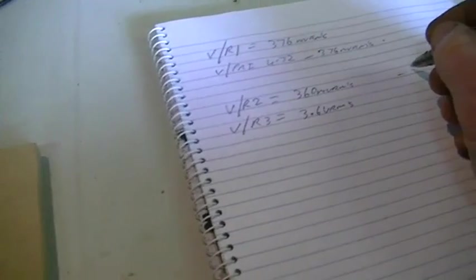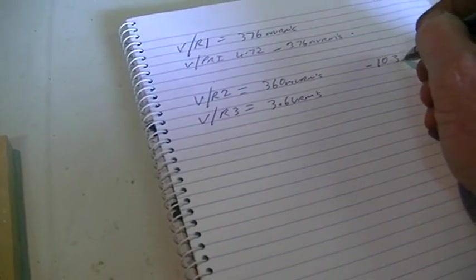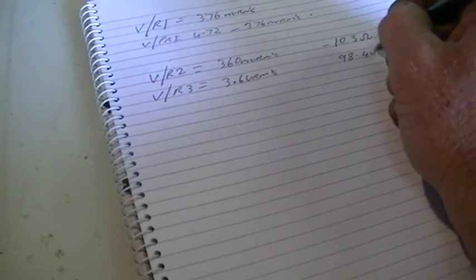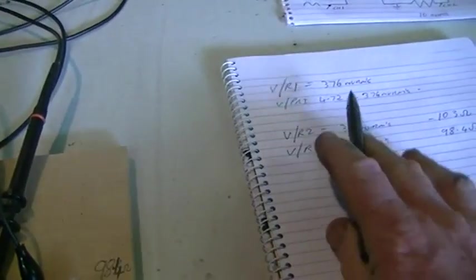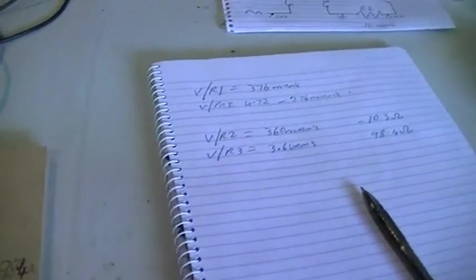And of course this resistor is 10.3 ohms and this one is our 98.4 ohms. So we now have enough to calculate our power in and power out.